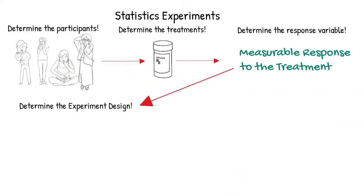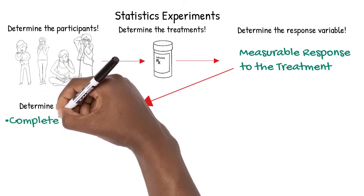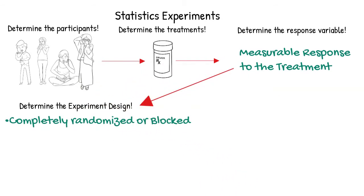For each group, there should be some randomization involved in assigning treatments for participants. Treatments can be assigned completely randomly, or we can group assignments into blocks according to something they have in common.